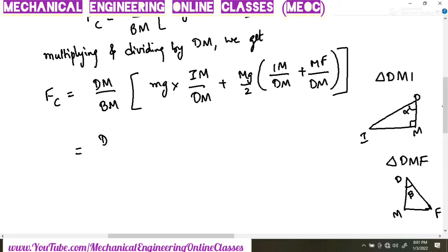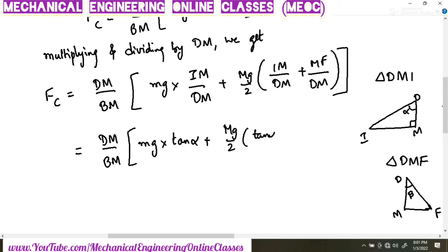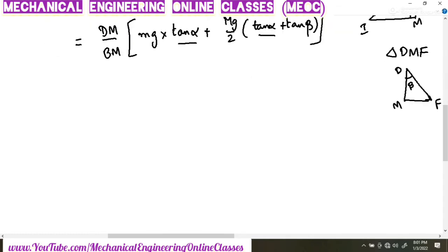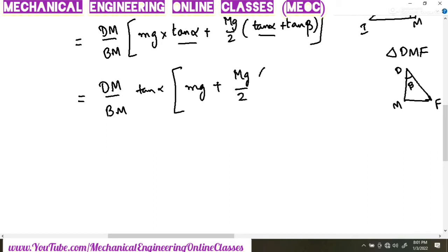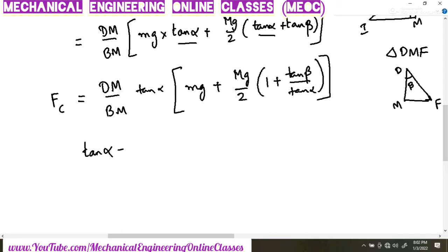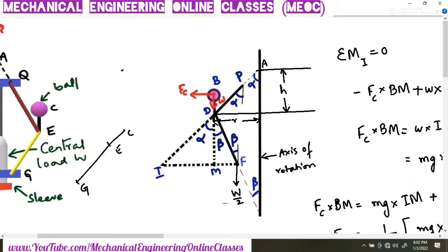Taking tan alpha common: Fc = (DM/BM) × tan alpha × [mg + (Mg/2) × (1 + tan beta/tan alpha)]. Since tan alpha = R/H from the figure, and letting q = tan beta/tan alpha (as in the Porter governor), and knowing Fc = MR·omega², we substitute: MR·omega² = (DM/BM) × (R/H) × [mg + (Mg/2) × (1 + q)].